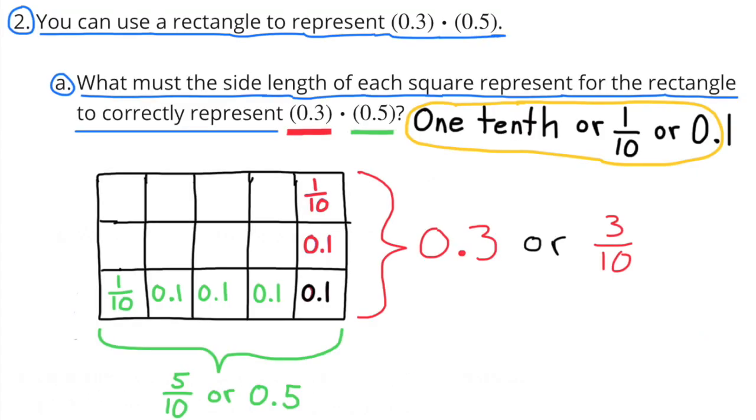Number 2: You can use a rectangle to represent 3 tenths times 5 tenths. Part a: What must the side length of each square represent for the rectangle to correctly represent 3 tenths times 5 tenths? Each side length of each square would represent 1 tenth.